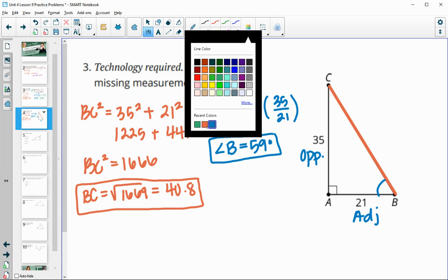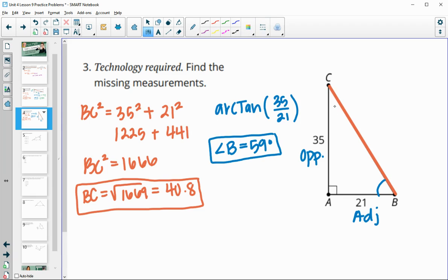And then to find angle C, we'll just subtract 59 from 90. So we'll do 90 minus 59 and that will give us angle C, which is 31 degrees.